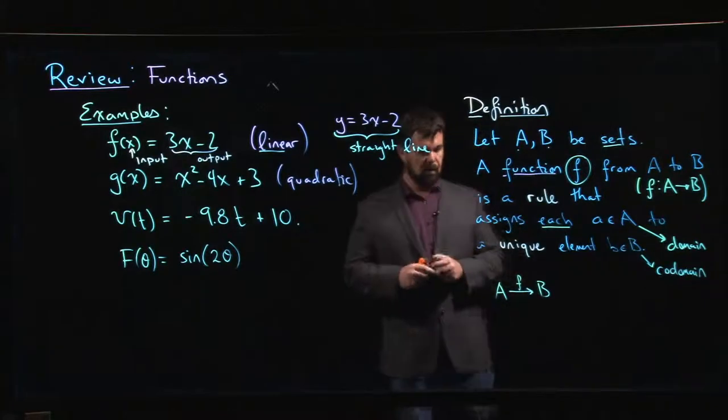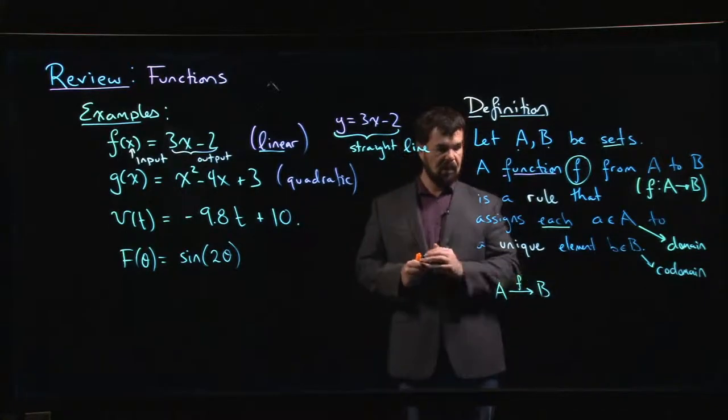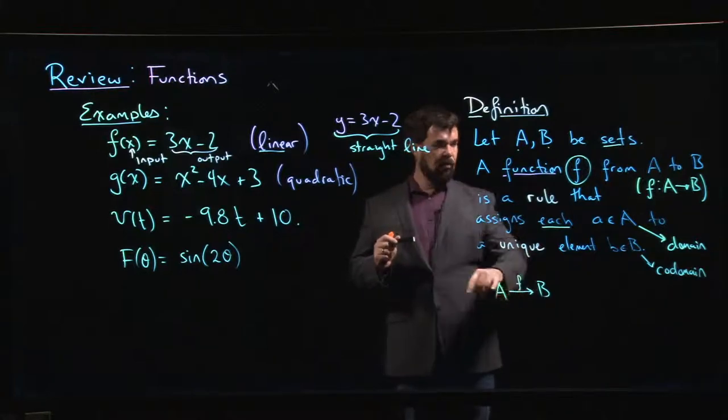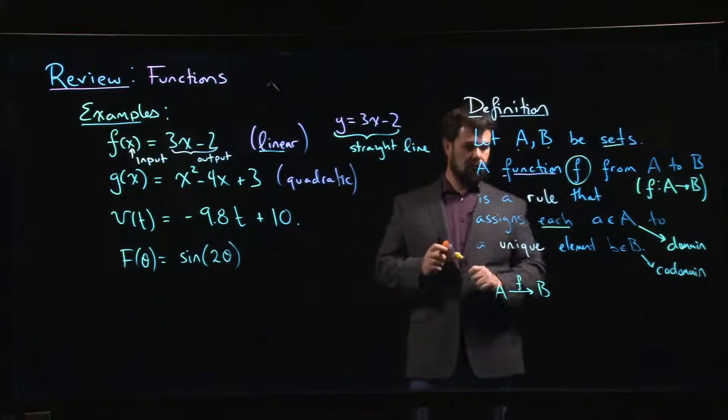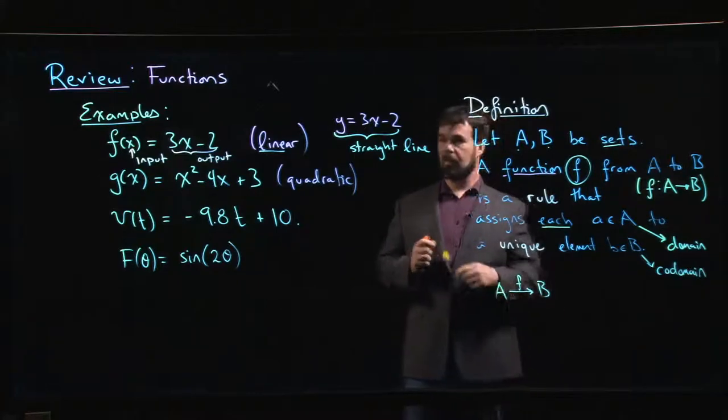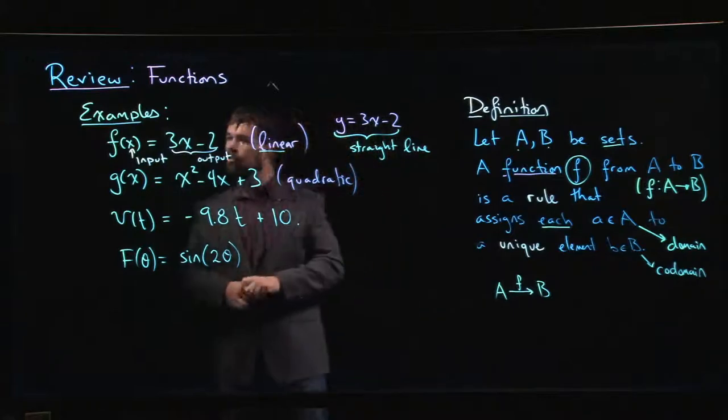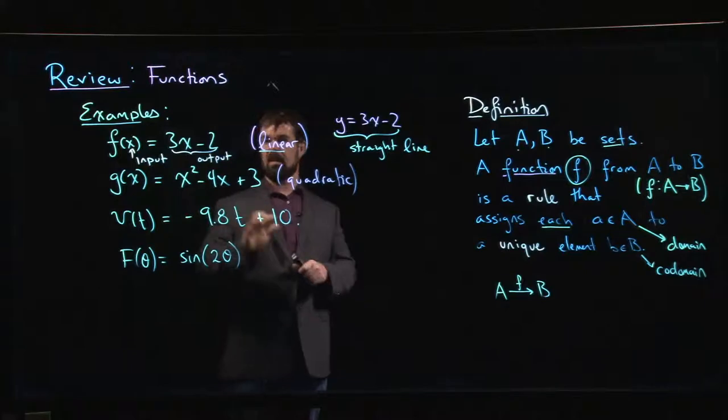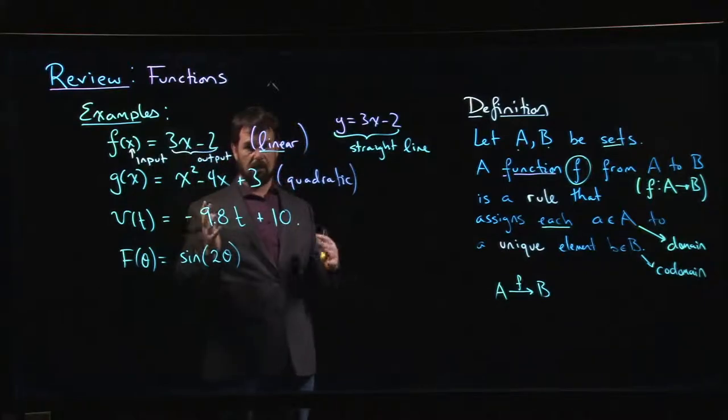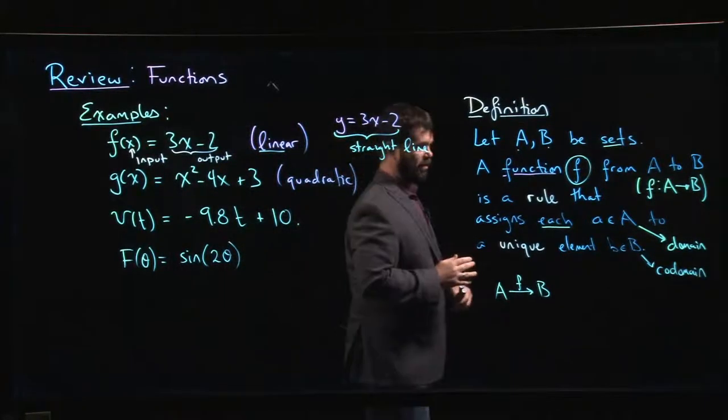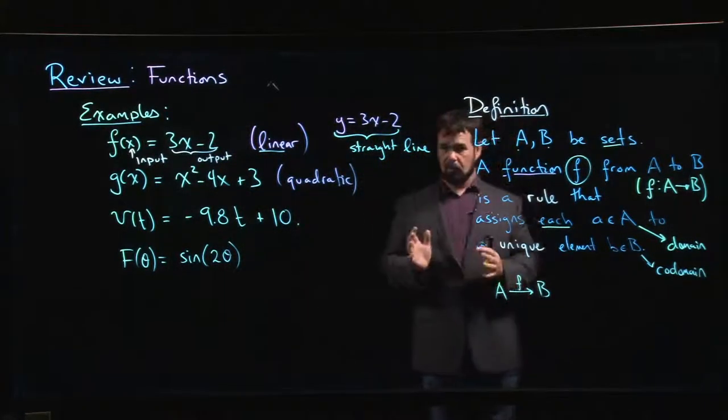So this is another notation that you might see. Unfortunately in calculus we tend to kind of gloss over some of this. We don't necessarily use this notation. We usually don't specify the sets A and B because those sets are always going to be subsets of the real numbers. So in calculus we get into this habit of letting the formula define the function. But the formula is really only part of the definition. The domain, the codomain, those are parts of the definition. This is something that will come up later when we talk about inverse functions.